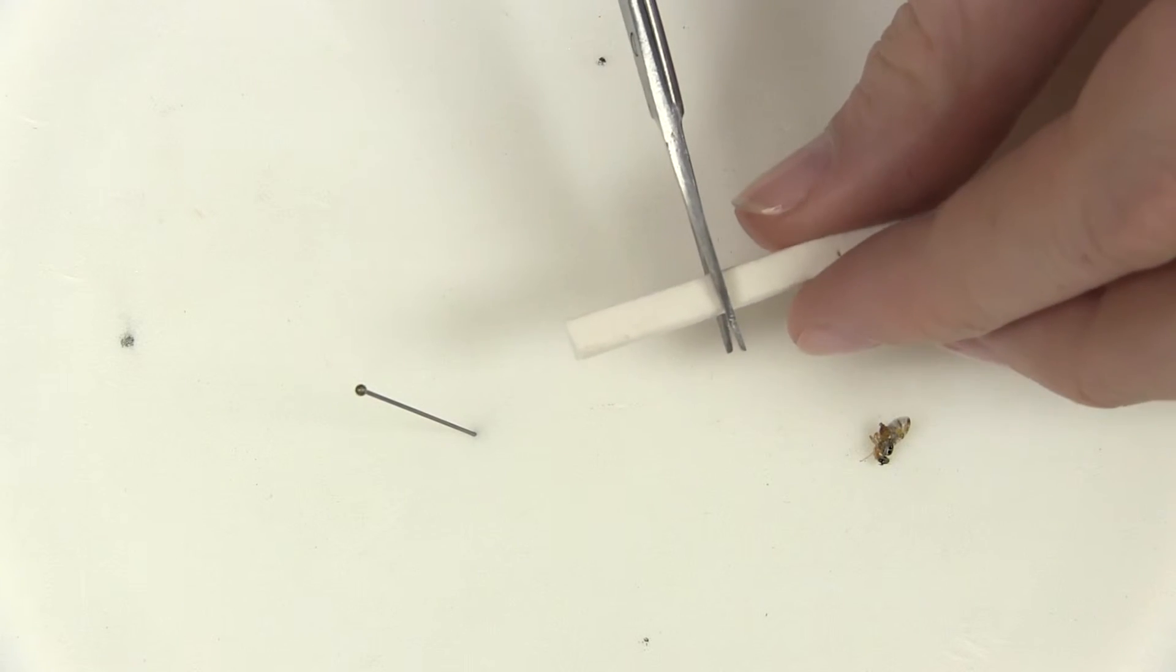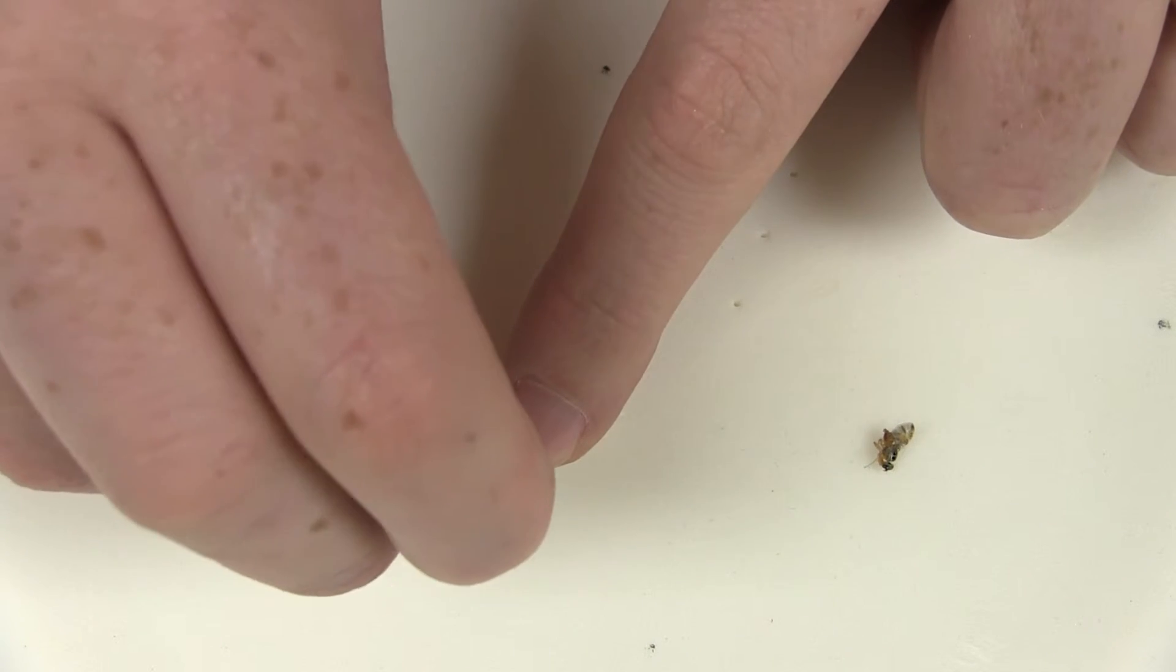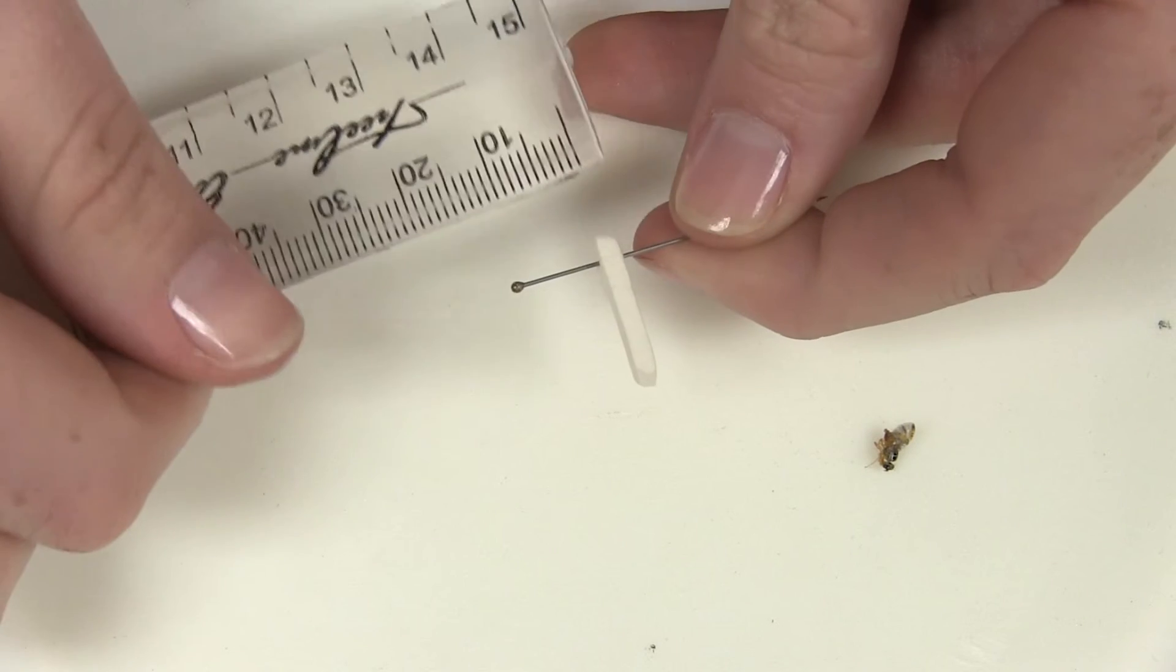Cut a piece of foam that is slightly longer than the length of the insect. Pin the piece of foam near the edge approximately one centimeter from the top of the pin.